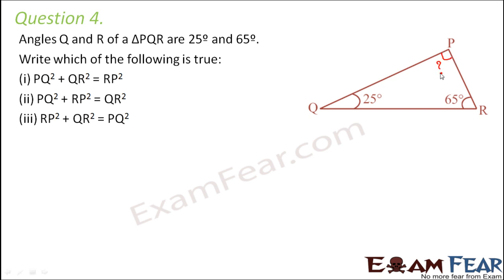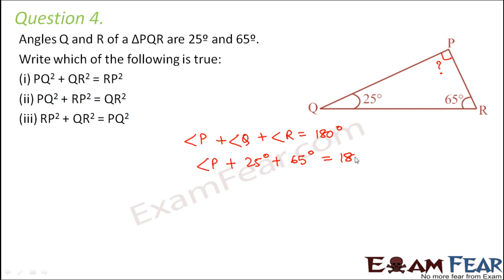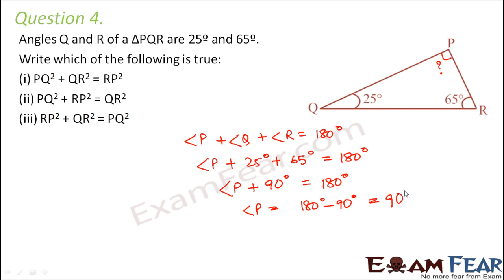Can we find this angle? Yes we can, because we know that the sum of the 3 angles of a triangle is 180 degrees. So angle P plus angle Q plus angle R equals 180 degrees. So angle P plus 25 degrees plus 65 degrees equals 180 degrees. 65 plus 25 is 90 degrees, therefore angle P equals 180 minus 90, which is 90 degrees.